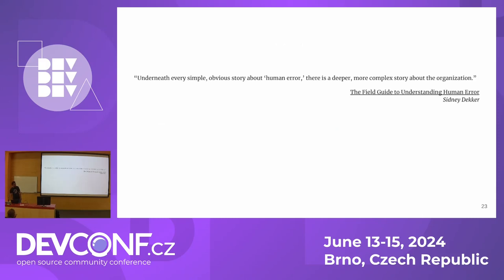When something like this happens, the developer who wrote that code has a very hard time. But sometimes the problem doesn't lie with the people — it lies with the processes. This is a quote from the book 'The Field Guide to Understanding Human Error,' which talks about the human side of technology failures. When I say organization, think of a Linux distribution.